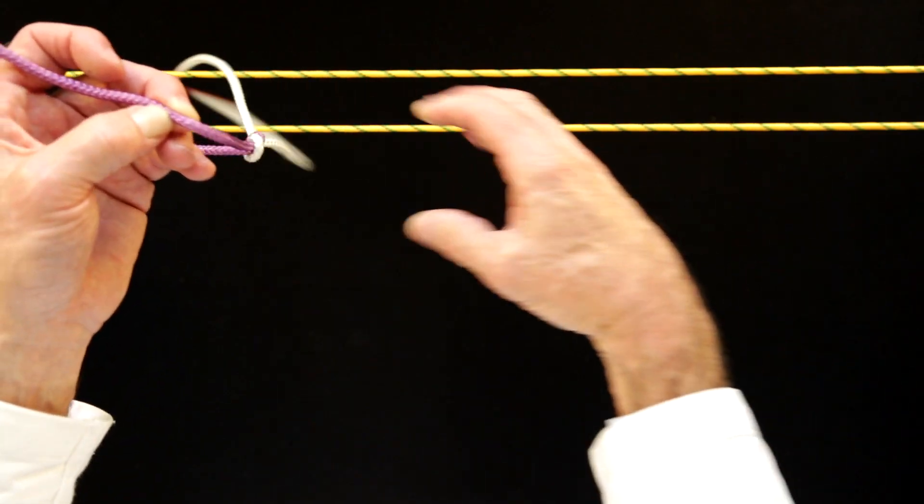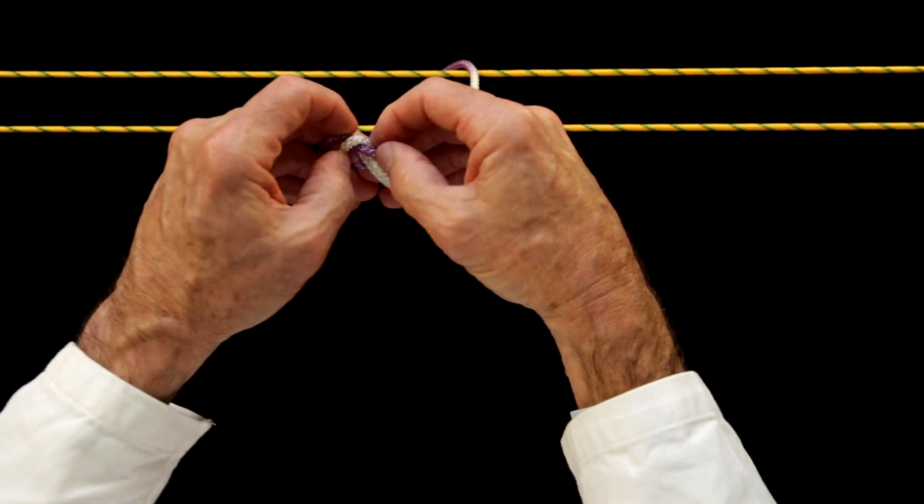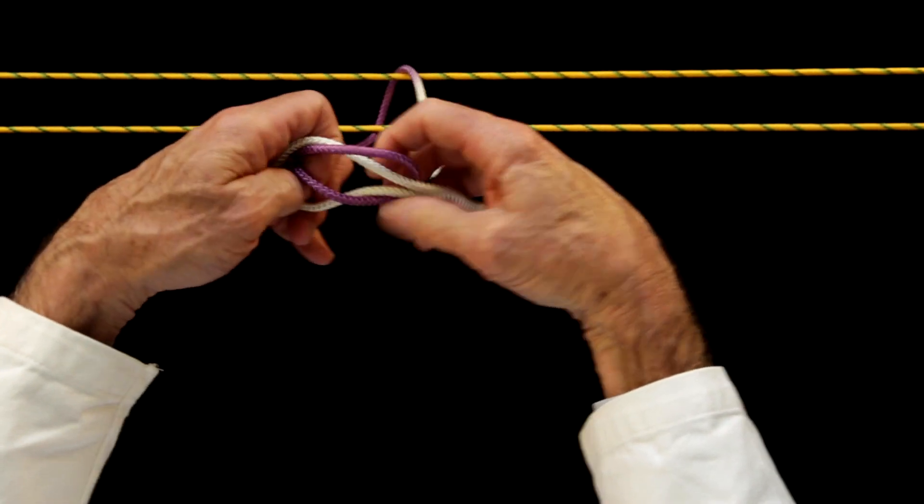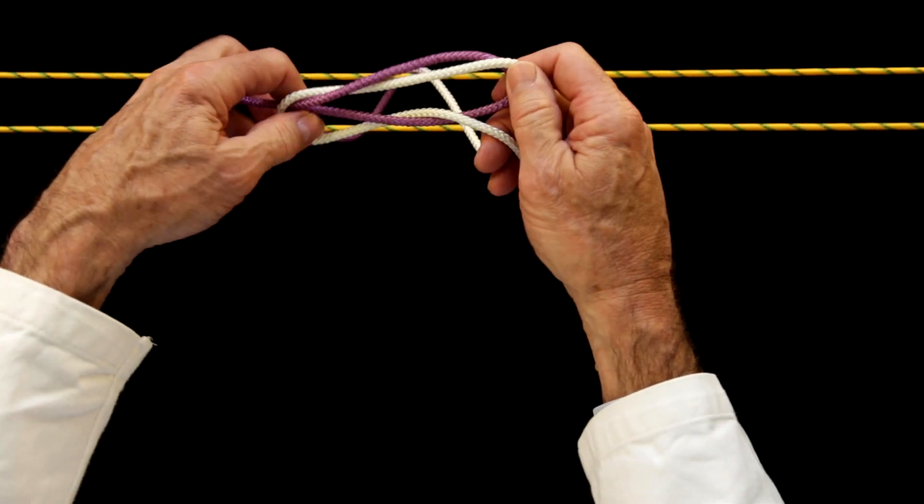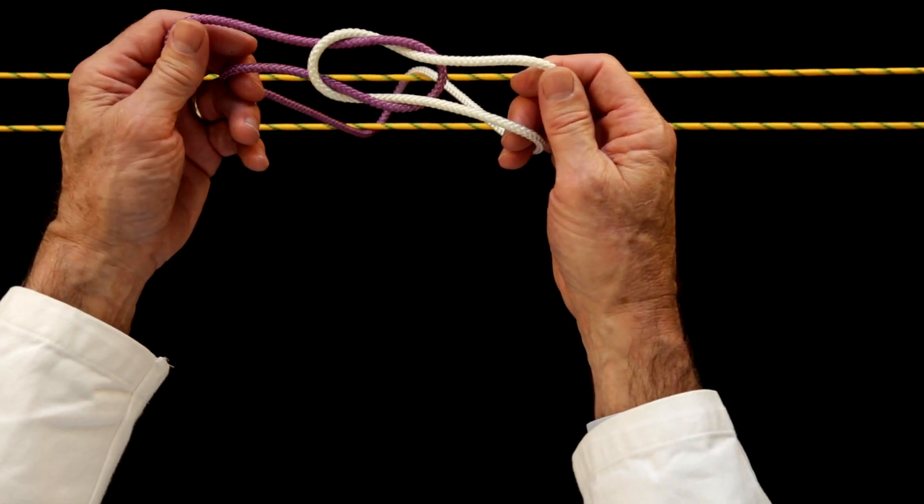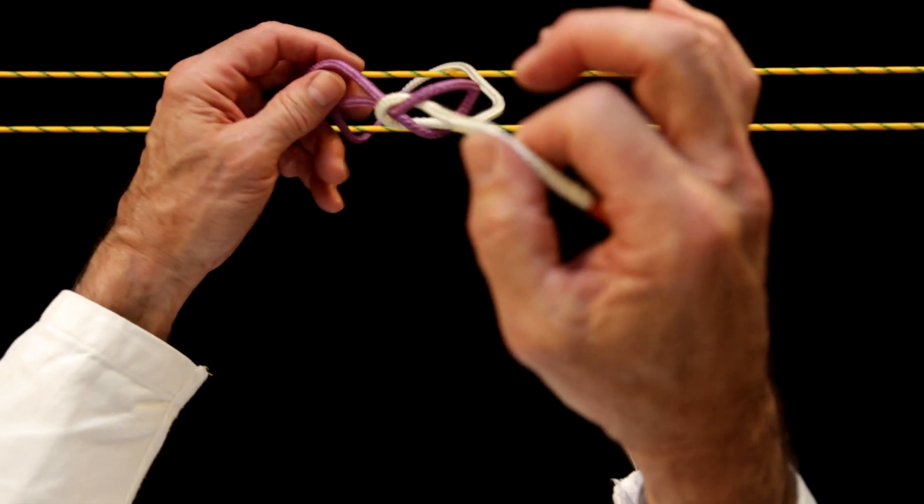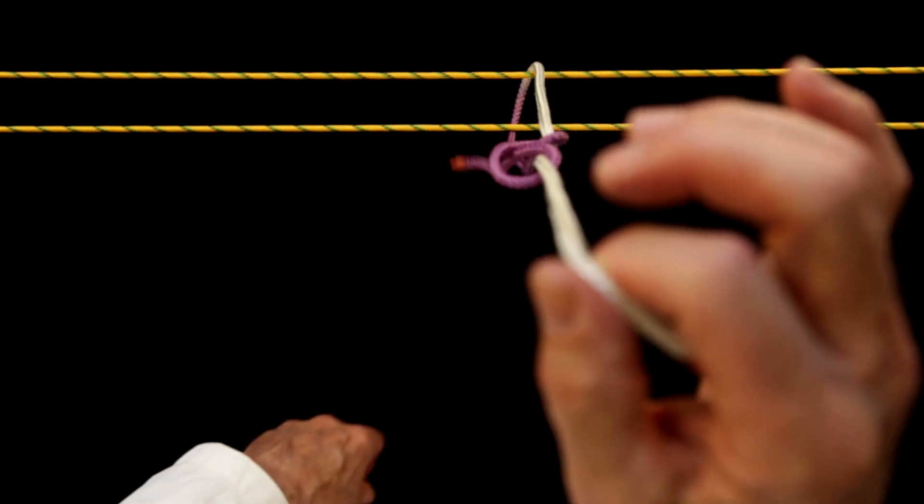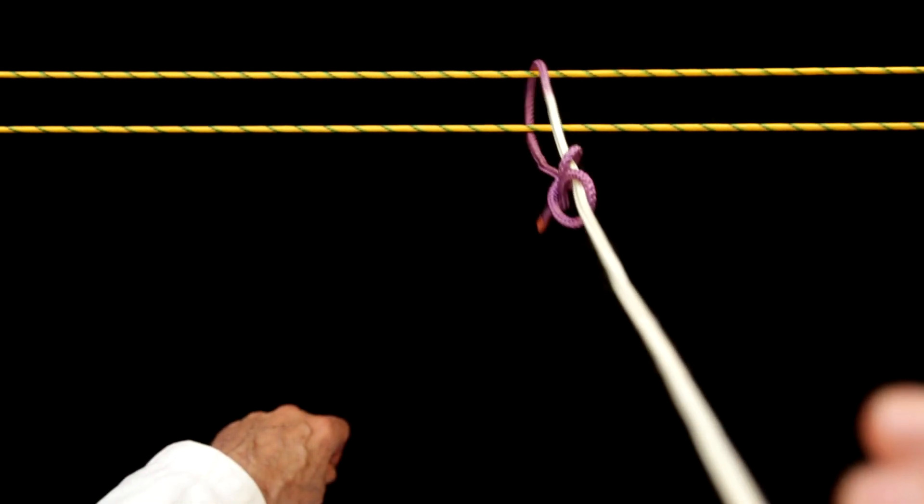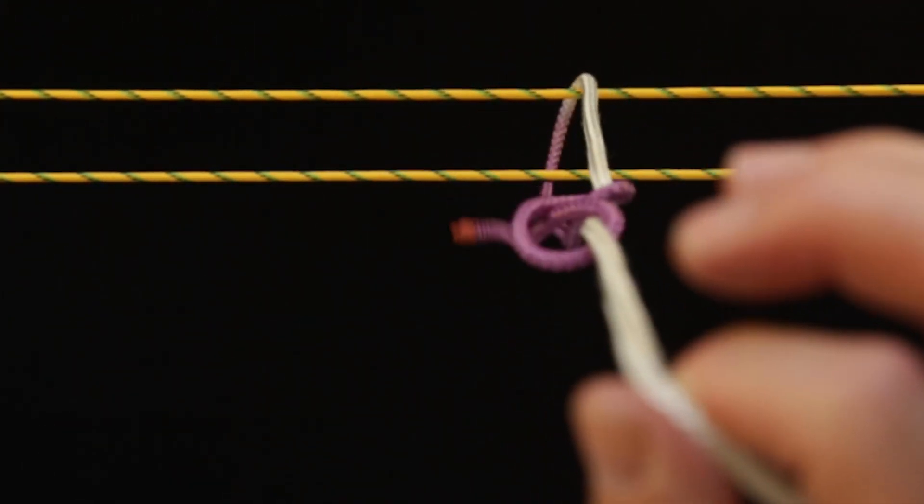Notice also if we take this knot apart, loosen it up again, what happens if you don't put tension on both working ends. If you put tension on only one working end, the knot changes configuration and slides. This is an important point we'll return to later.